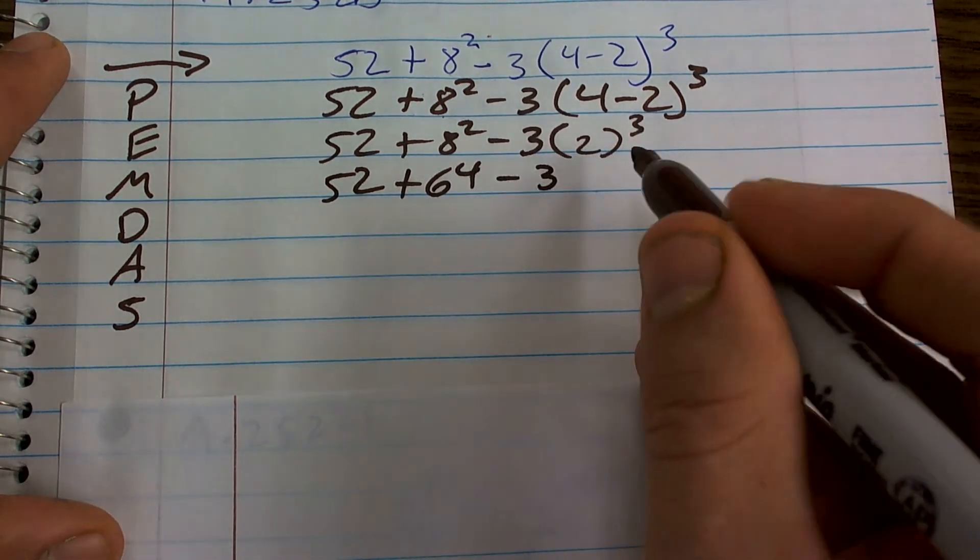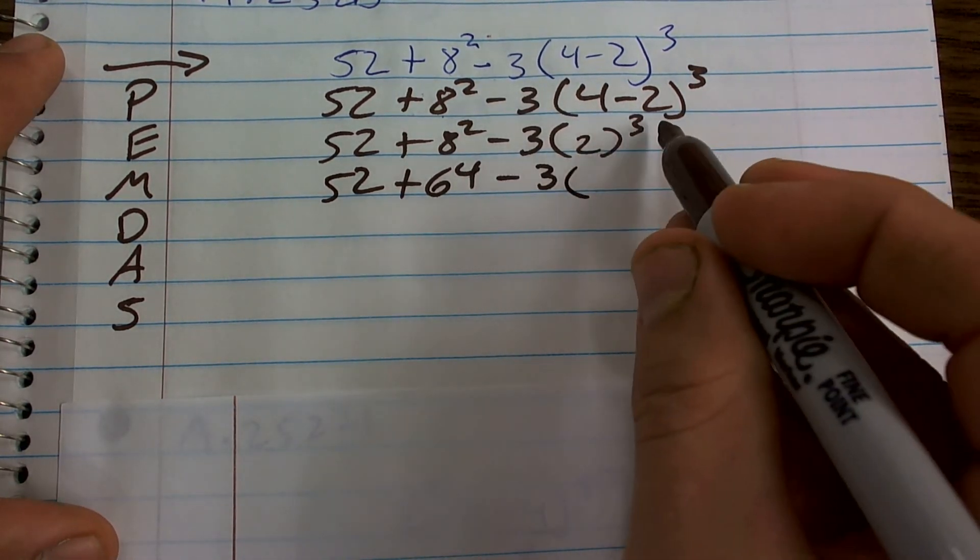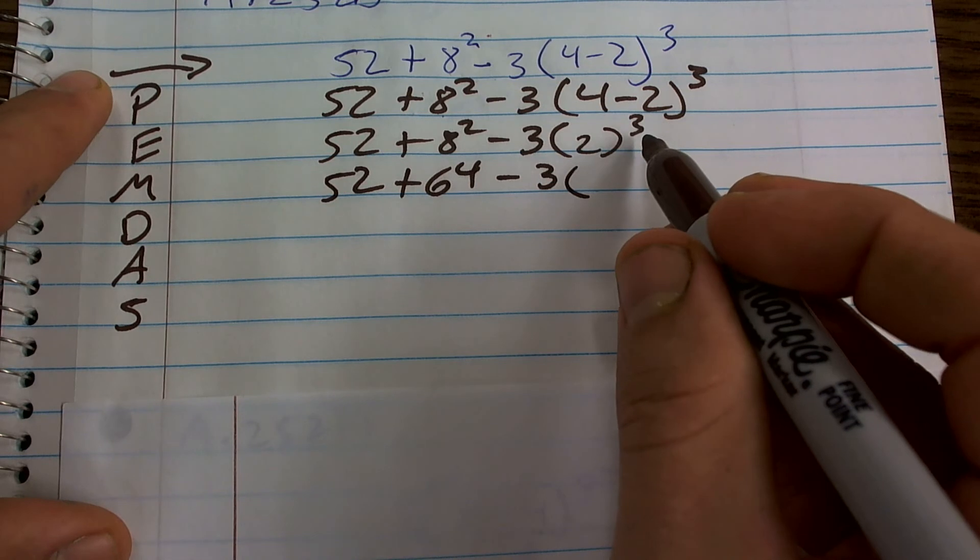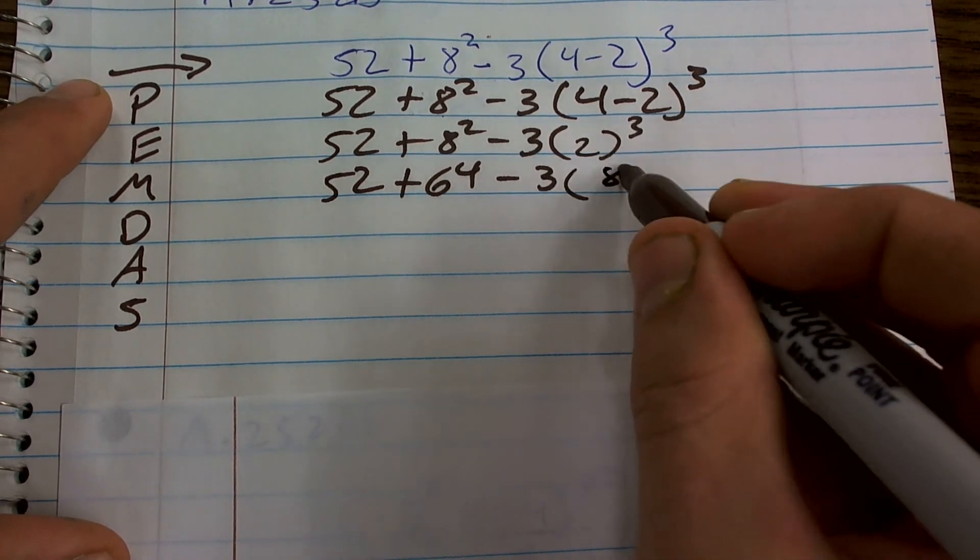Minus 3 times 2 cubed, which is 2 times 2 times 2, which is 8.